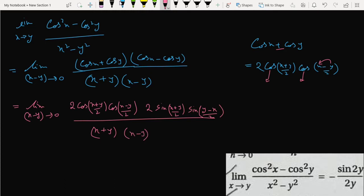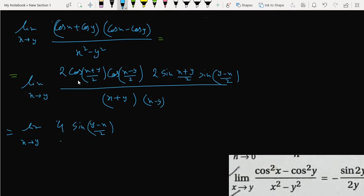So 2 and 2 become 4, and I'm writing it here as (x-y)/2 divided by (x-y). The limit I can write as x tends to y.